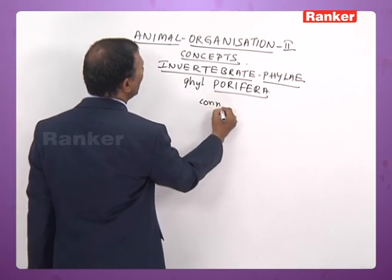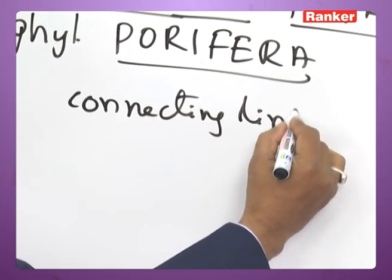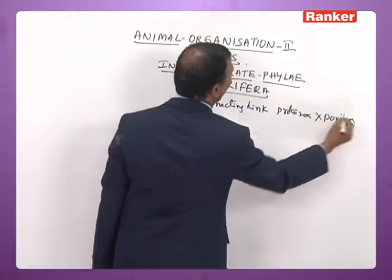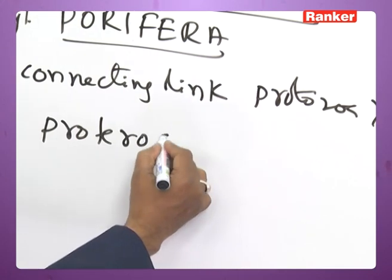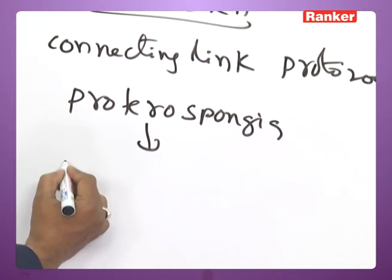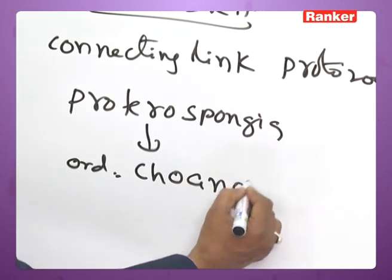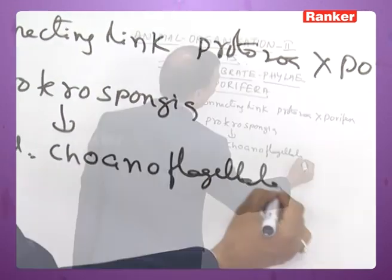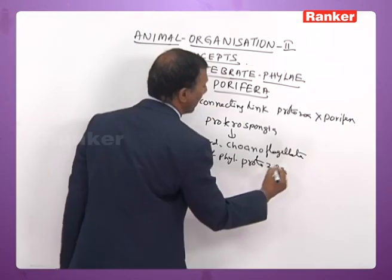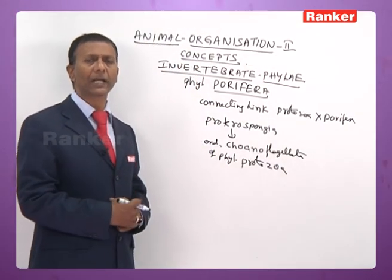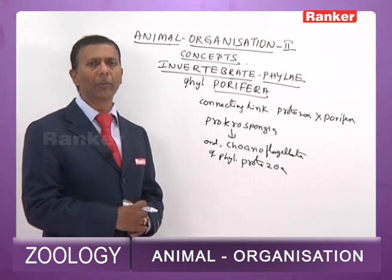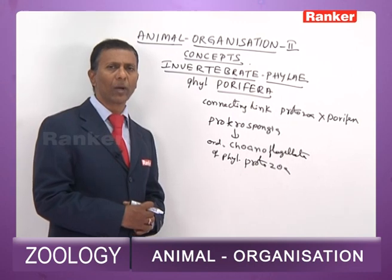The connecting link between Protozoa and Porifera is Proterospongia. Proterospongia belongs to order Choanoflagellata of phylum Protozoa, and it happens to be the connecting link between Protozoa and Porifera because it exhibits characteristic features of both Protozoa and Porifera.